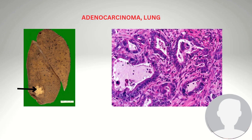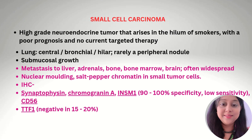Small cell carcinoma is a high-grade neuroendocrine tumor that arises in the lungs of smokers, with a poor prognosis and no current targeted therapy. It can be central, bronchial, hilar, and rarely a peripheral nodule, with a submucosal growth pattern. It can metastasize to the liver, adrenal glands, bone, bone marrow, and brain, and widespread metastasis is often present. The key histological feature is nuclear molding and salt-and-pepper chromatin in small tumor cells.